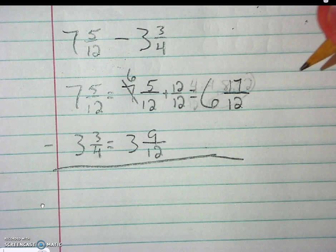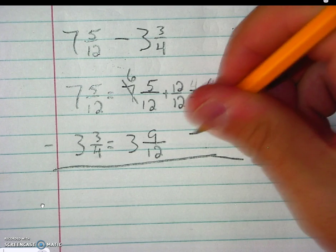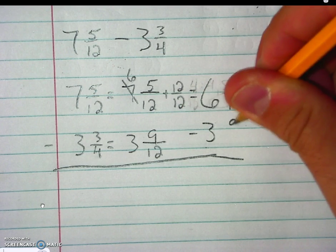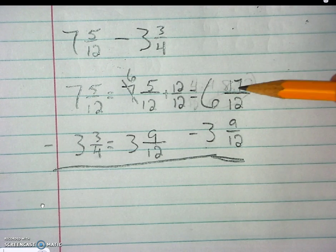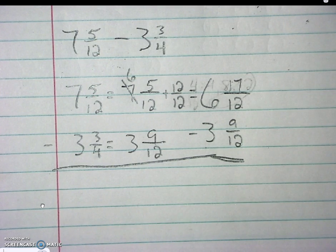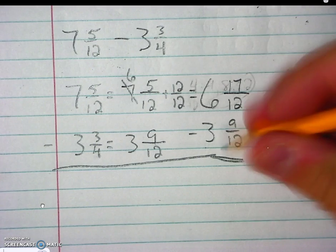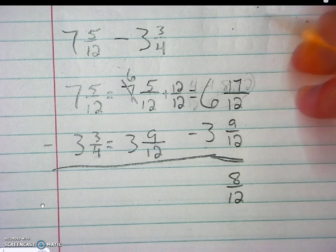Now, with 6 and 17 twelfths, I can subtract 3 and 9 twelfths. 17 minus 9, so from 9 I can just count up: 9, 10, 11, 12, 13, 14, 15, 16, 17. It is 8. So I will end up with 8 twelfths after I subtract those fractions.